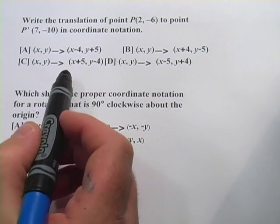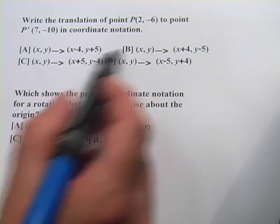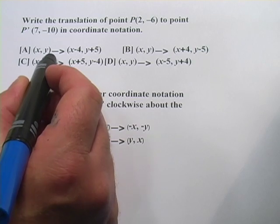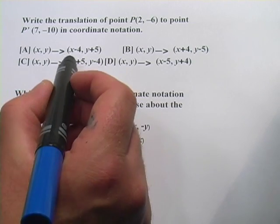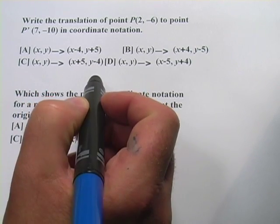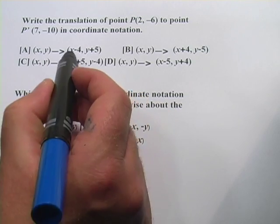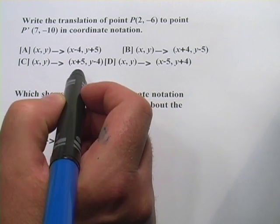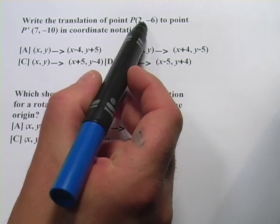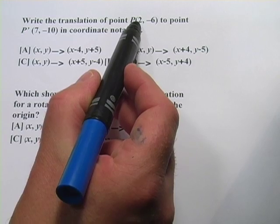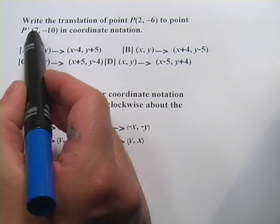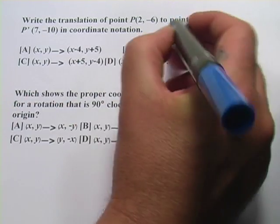If you look at the answers here, you'll see this coordinate notation is all kind of the same. You have x, y and an arrow, and then x plus or minus something, and y plus or minus something. That plus or minus shows just the change that's occurred. So what's the change in the x coordinates here? It goes from 2 to 7 — that's a plus 5.